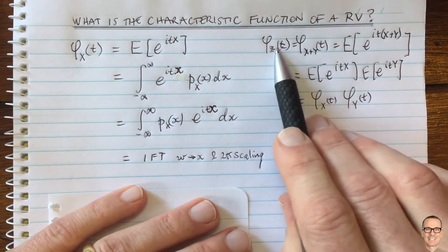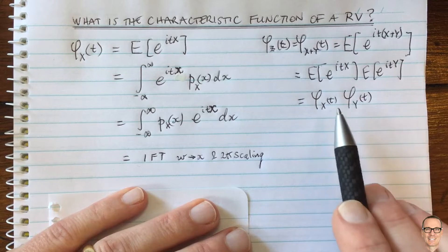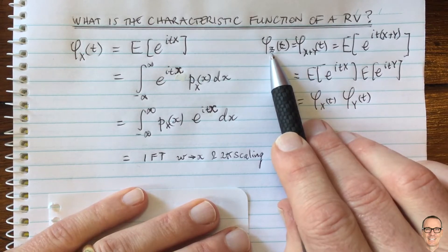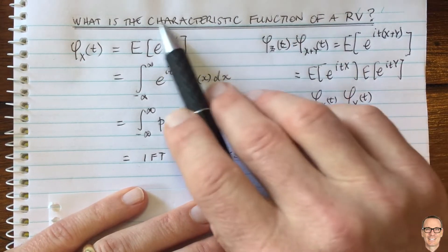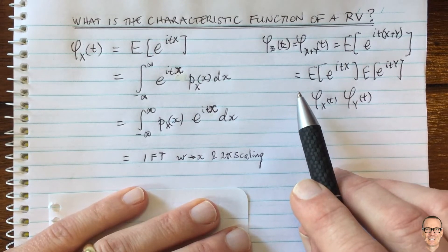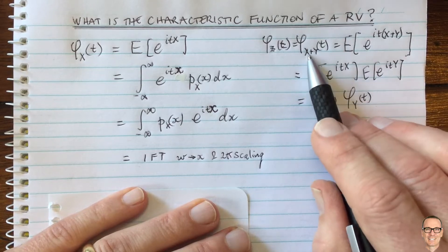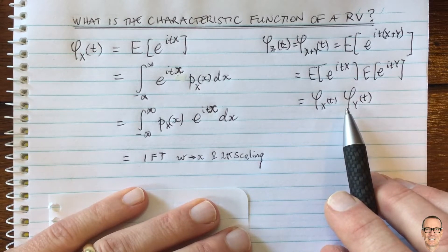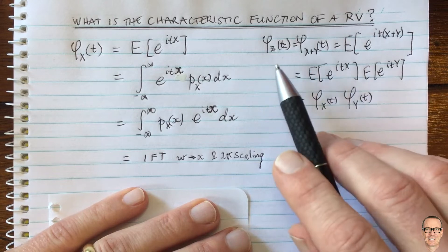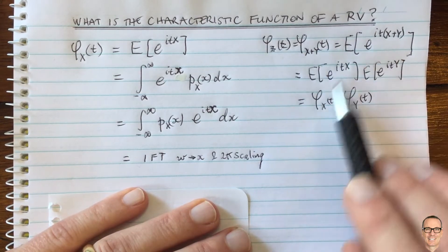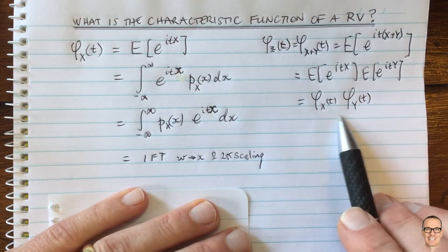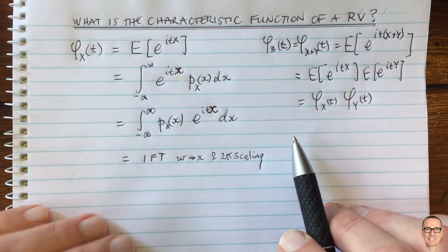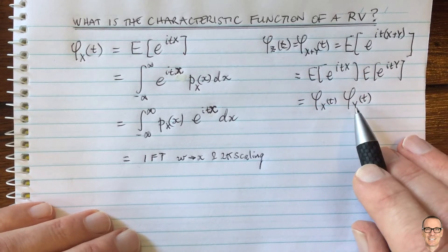And of course, if you want the probability density function of Z, you can find its characteristic function and then take the Fourier transform to get the PDF of Z. If you were not to use the characteristic function, you would have to take the convolution of the two probability density functions — the PDF of X convolved with the PDF of Y. Through the Fourier transform property, convolution in one domain corresponds to multiplication in the other, which is exactly what we see with the characteristic function. So using it avoids the more complicated convolution.